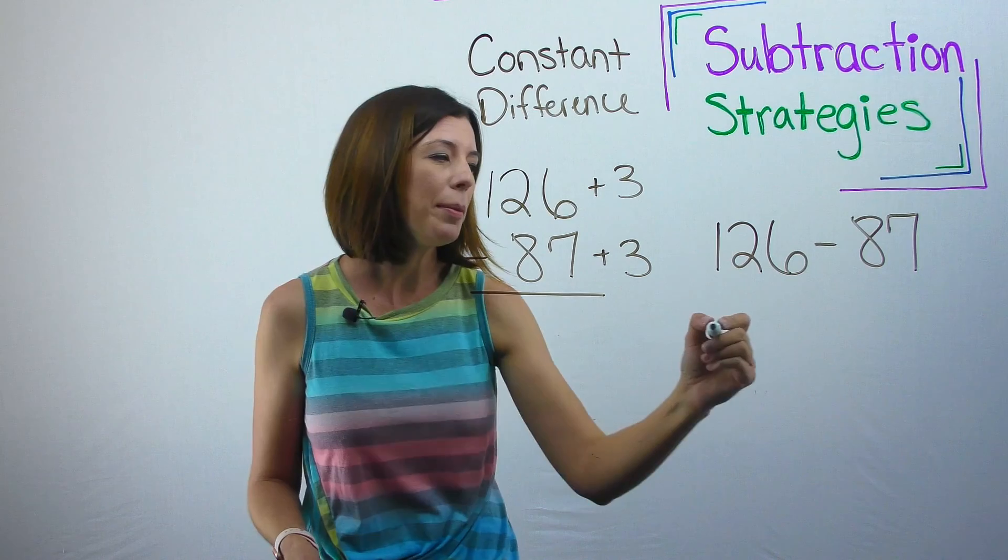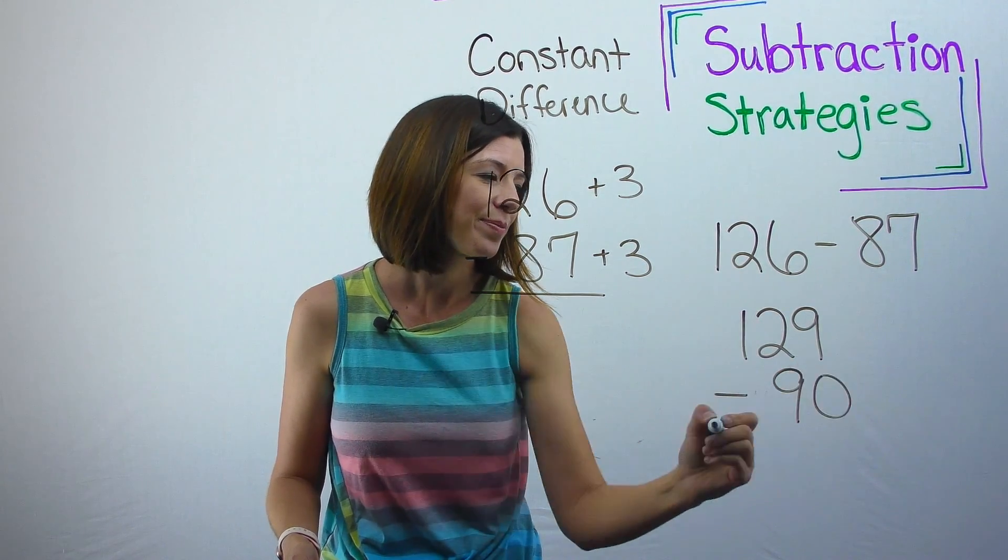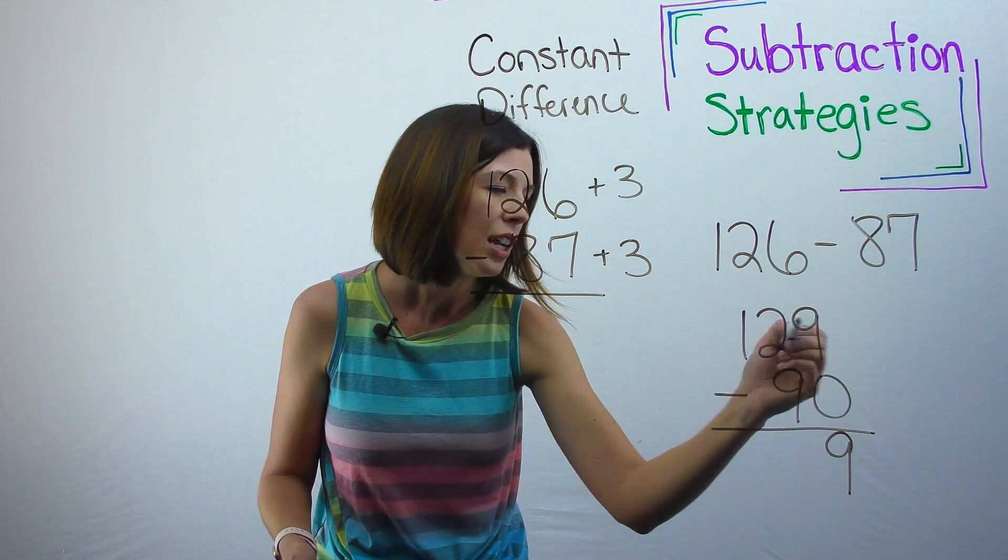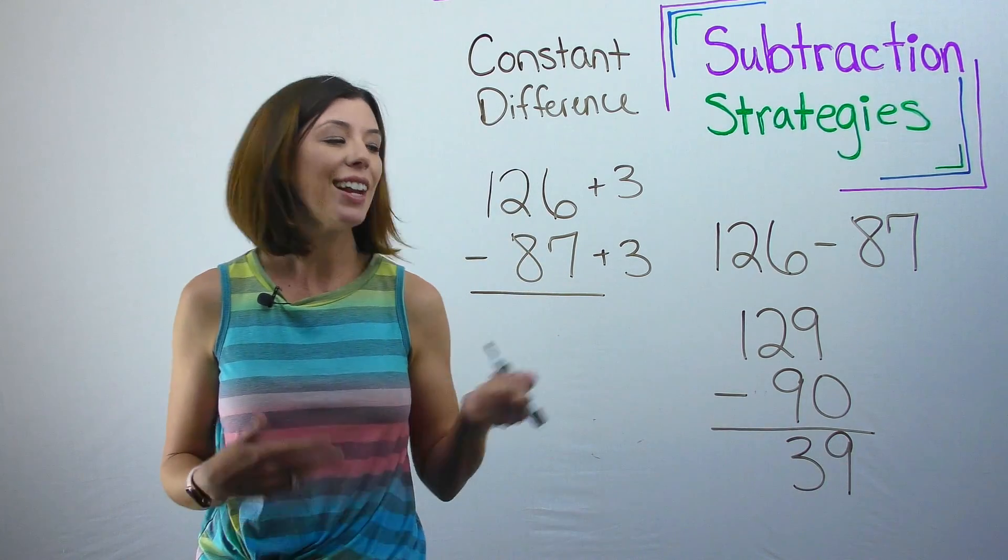And I can see that I get 9 minus 0 is 9. 120 minus 90 would give me 30 and I get 39.